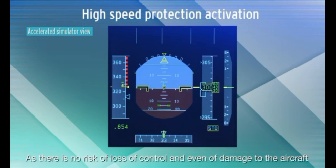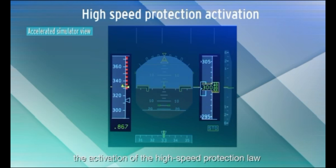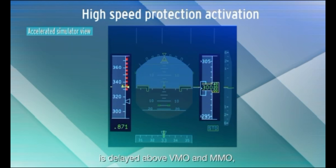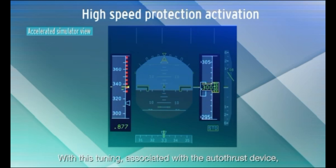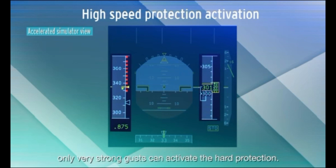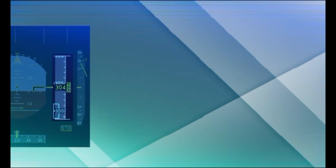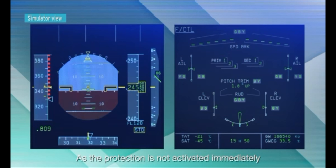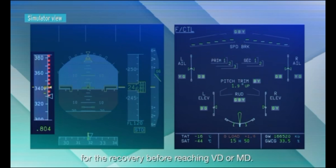As there is no risk of loss of control and even of damage to the aircraft when slightly exceeding VMO or MMO, the activation of the high-speed protection law is delayed above VMO and MMO by around 10 knots for VMO. With this tuning associated with the autothrust device, only very strong gusts can activate the hard protection. As the protection is not activated immediately when exceeding VMO/MMO, there is only around 25 knots for the recovery before reaching VD or MD.